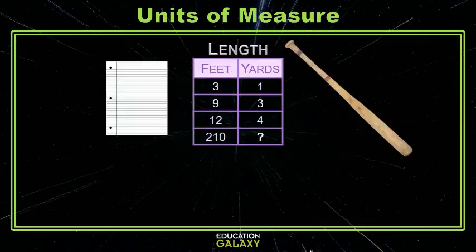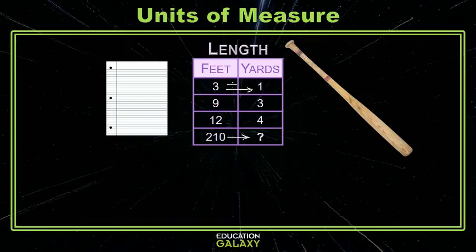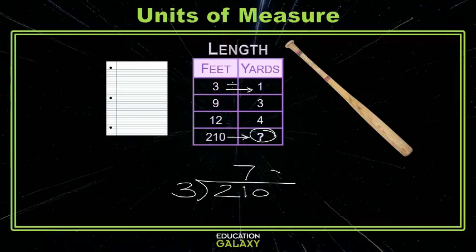How about one for length? A baseball bat is about a yard, and a piece of paper is about a foot, so the foot is the smaller unit of measure. We're going from the smaller unit to the bigger unit, so that is division. We are given that there are 3 feet in one yard, so when we solve this, we divide by 3. If we divide 210 by 3, we get 70 — so 70 yards equals 210 feet. Those are some samples with the customary system.